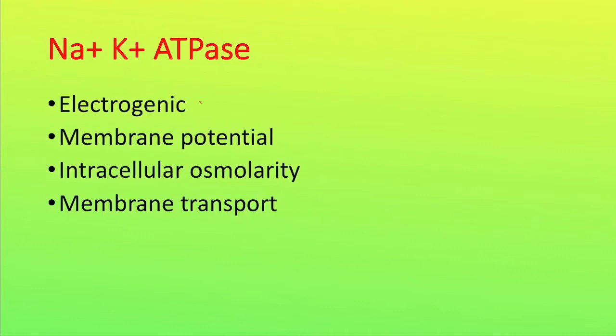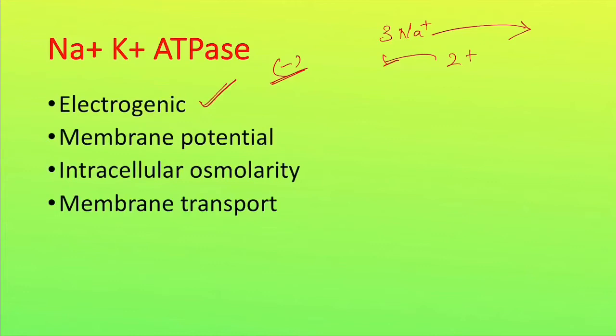The sodium-potassium pump is electrogenic — it transports three positive ions out of the cell and takes back only two positive ions. This leaves the cell with one extra negative charge within the cell, because there is a net loss of positivity inside the cell. That is why we call it electrogenic. Some transporters transport equal numbers of positive charges in and out, so we call them electroneutral.